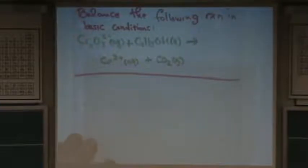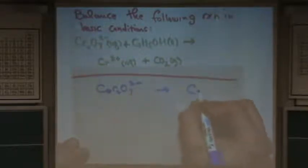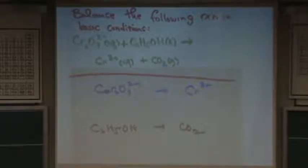It just allows you to do the same technique over and over again so that you don't have to confuse yourself with different techniques. But if you don't like this, that's totally fine. Do whatever the heck you want. Okay, so we have the dichromate, Cr2O7 2- goes to the chromium 3+. So I'm first splitting it up into half reactions. And then the other one is the C2H5OH goes to CO2.